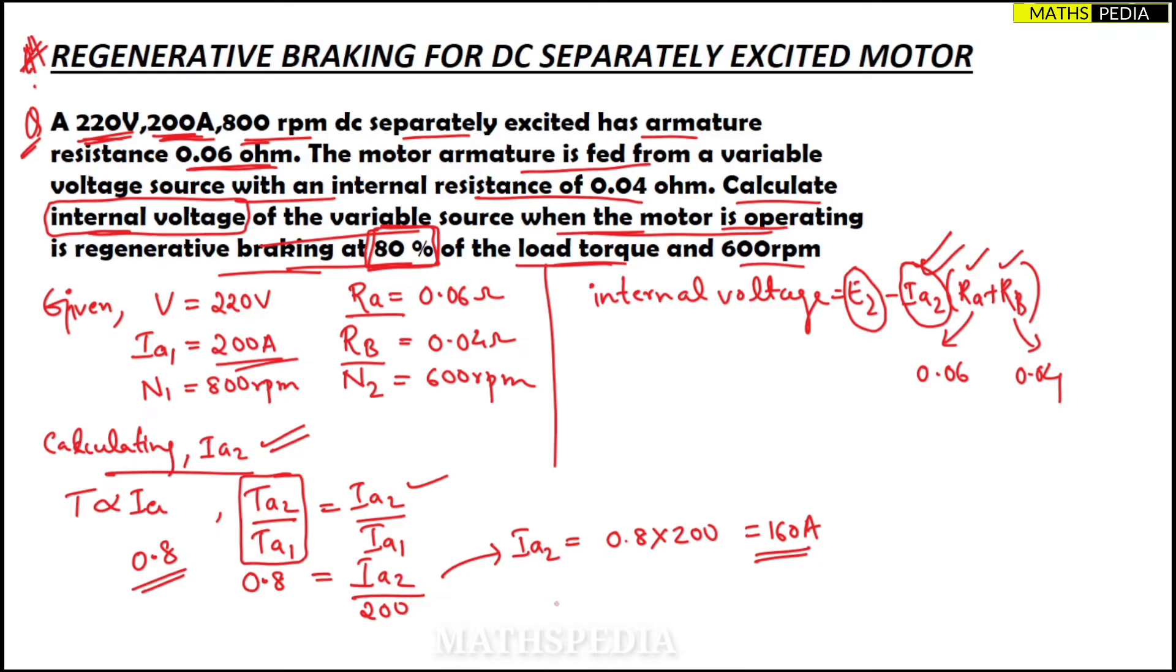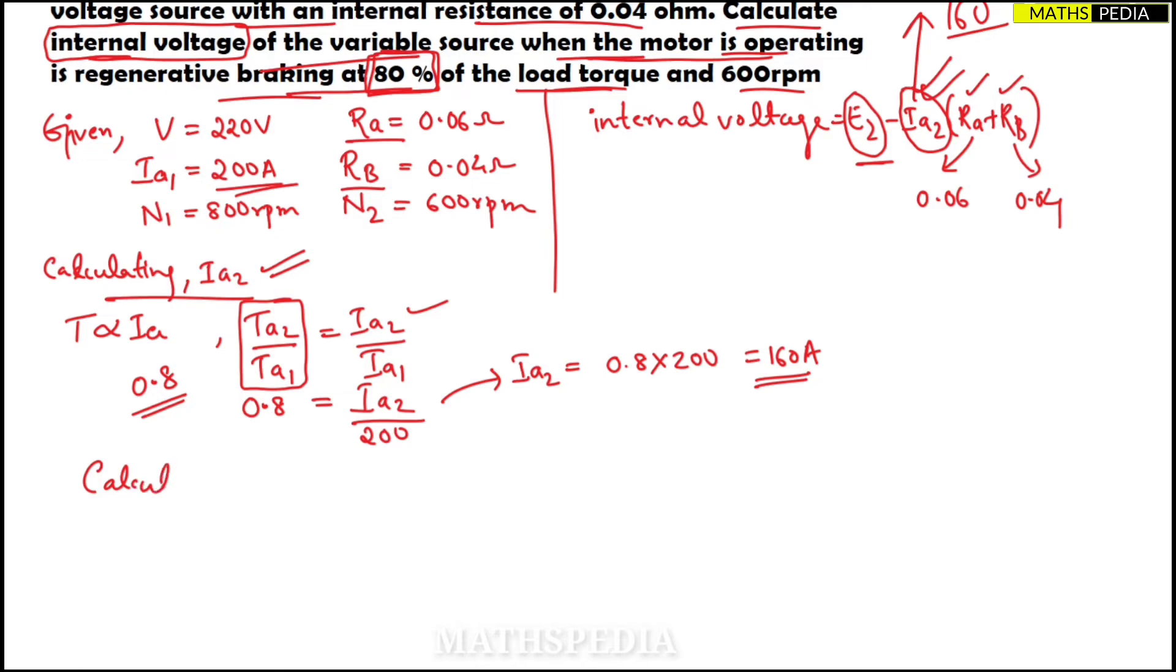This is what I got for Ia2. Now Ia2 we got, so this part is finished, that is 160. Let us go for E2 calculation.